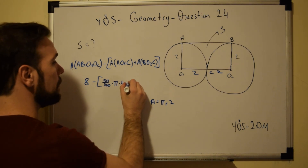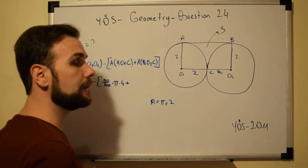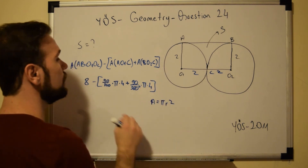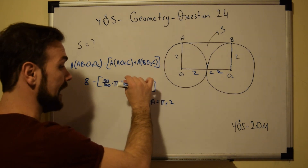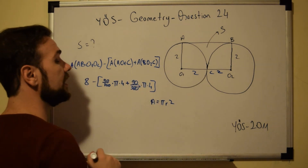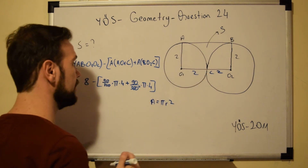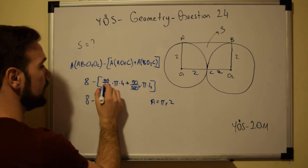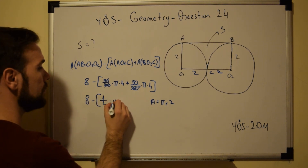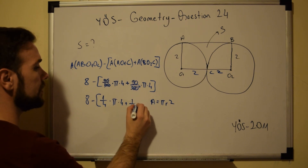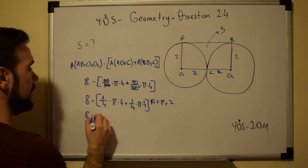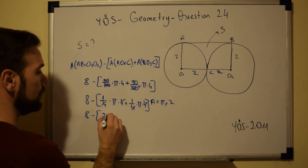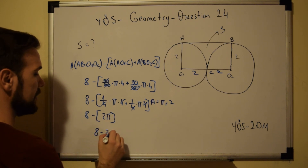With R = 2, R² = 4. The same applies to both quarter circles since they have equal values. So we have 8 minus (90/360 × π × 4) plus (90/360 × π × 4). Simplifying 90/360 gives ¼, and ¼ × 4 = 1, so each sector area is π. Together that gives 2π. The final answer is 8 − 2π.